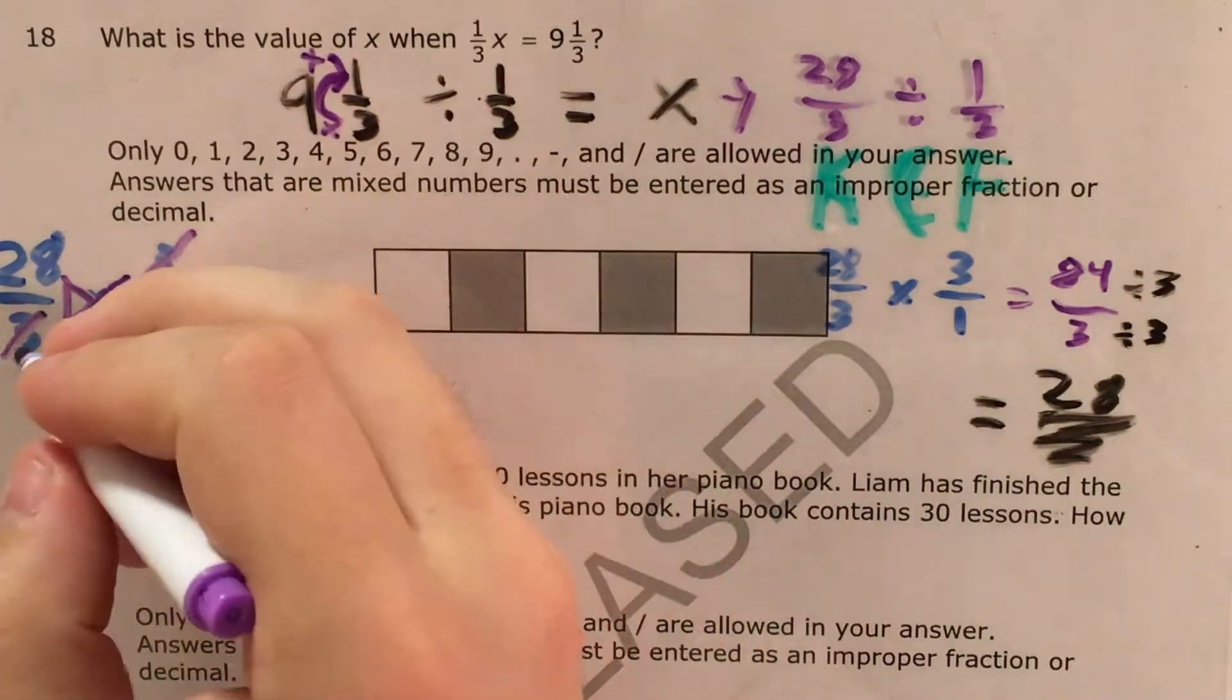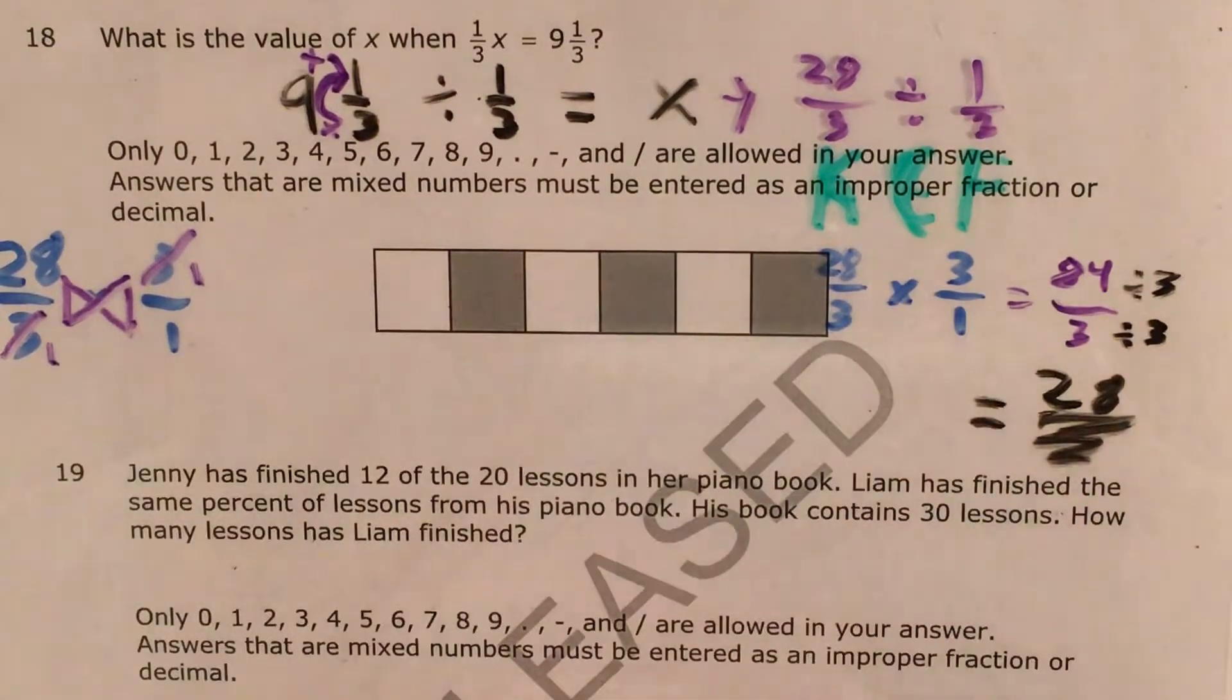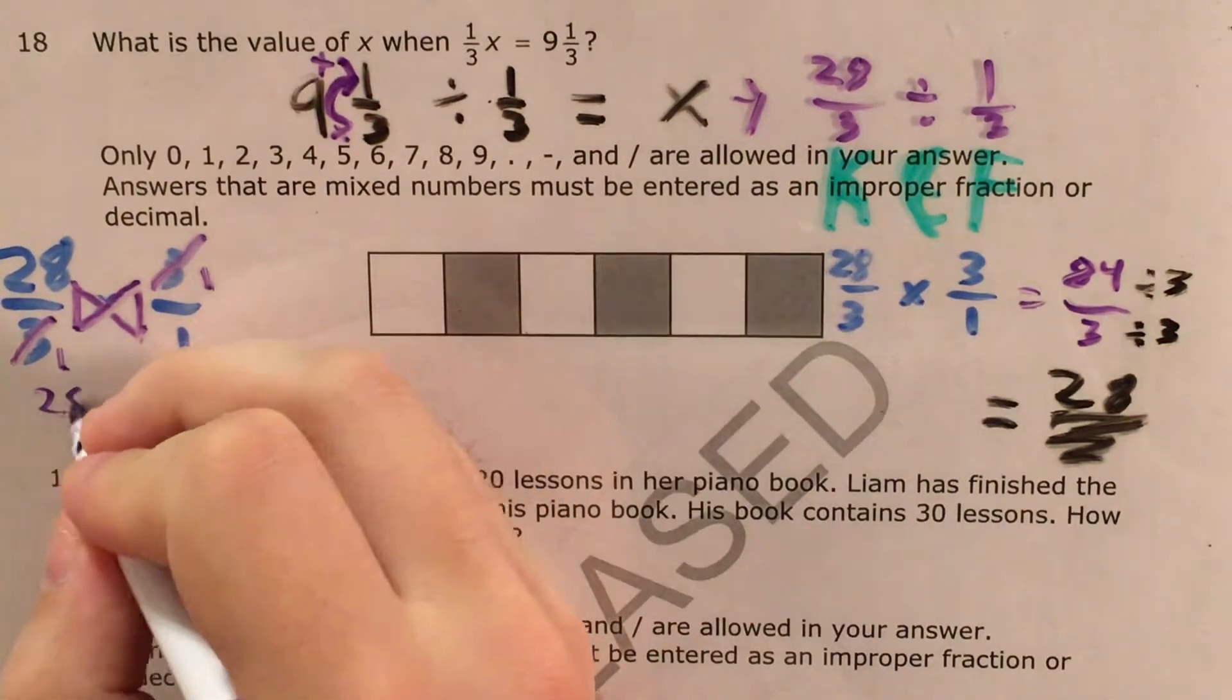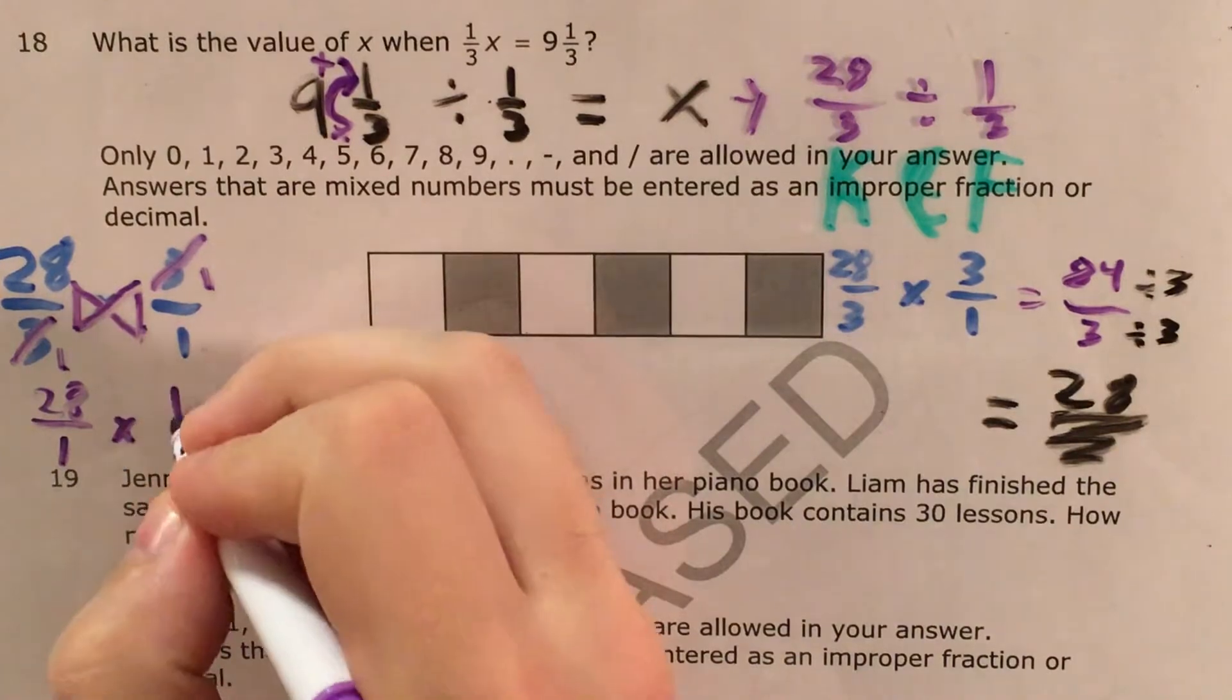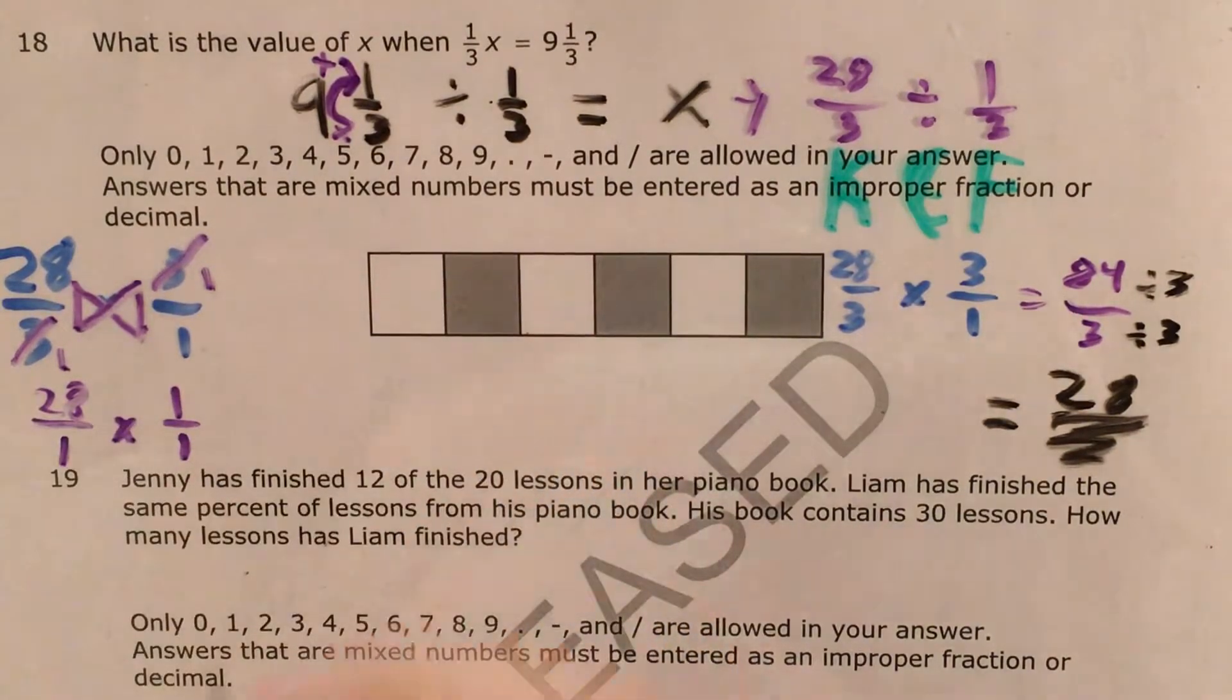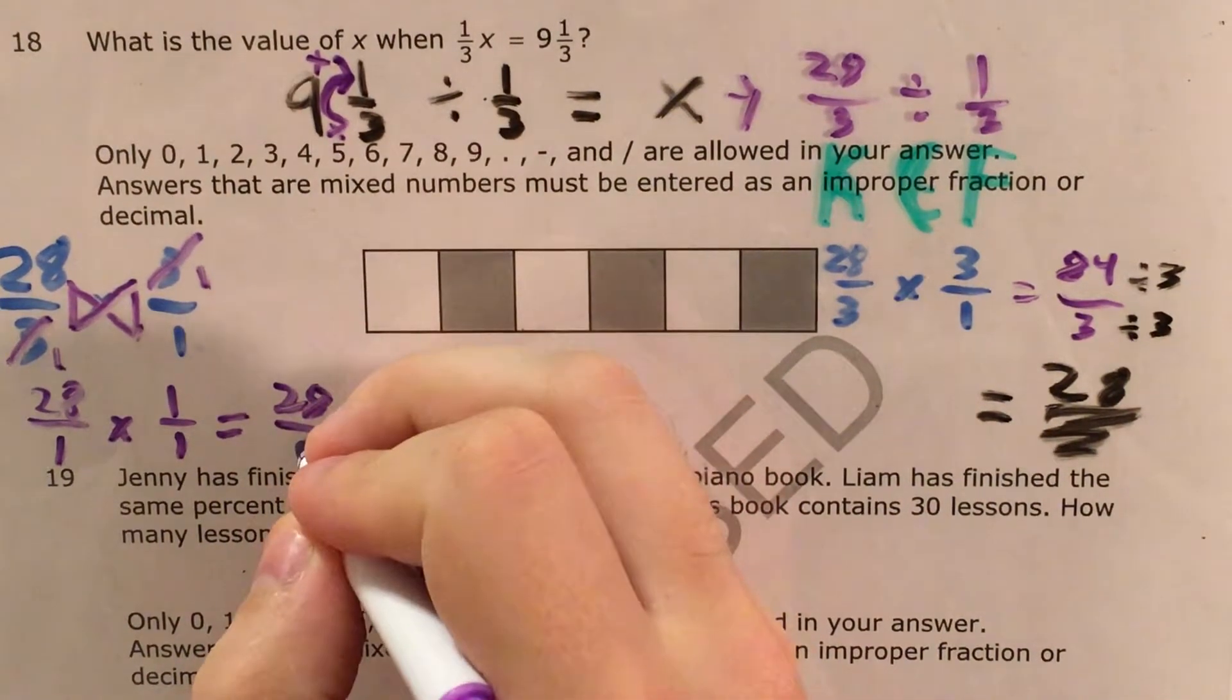So I can knock out both of these 3s and essentially divide them by 3, which is the same as what we did over here. Replace these with 1s. So now I end up with 28/1 times 1/1. And if I multiply my numerators and denominators, I'm still going to get 28 times 1 is 28. 1 times 1 is 1. And once again, I end up with 28.